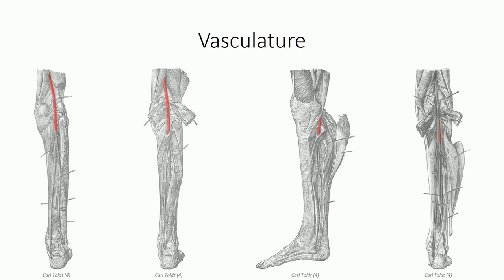The popliteal artery, identified previously in our study of the popliteal fossa, supplies blood to the entire leg. It passes between the medial and lateral heads of the gastrocnemius muscle to enter the posterior compartment, where it gives off a series of muscular branches that supply the muscles in the superficial portion — gastrocnemius, soleus, and plantaris. The artery then continues through the soleal arch to enter the deep portion of the posterior compartment, where it almost immediately splits into anterior and posterior divisions.